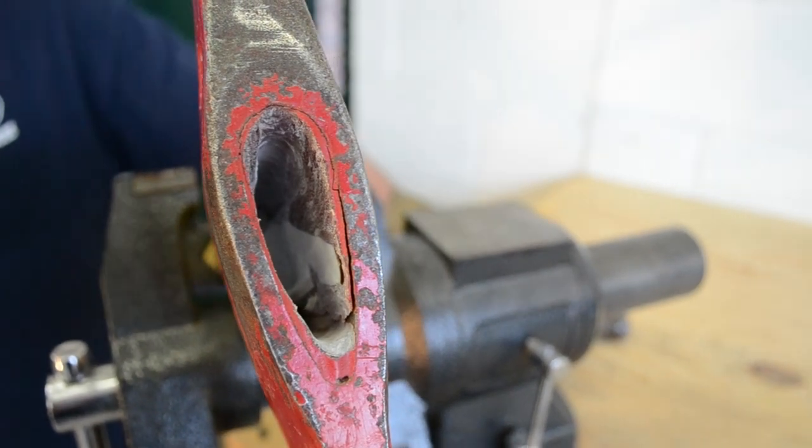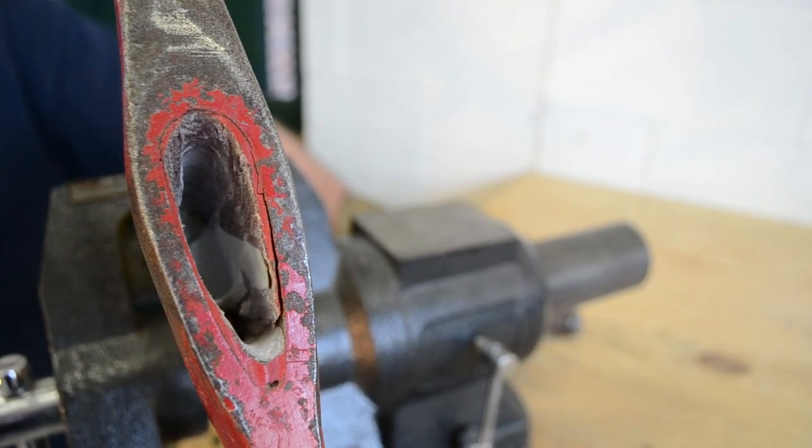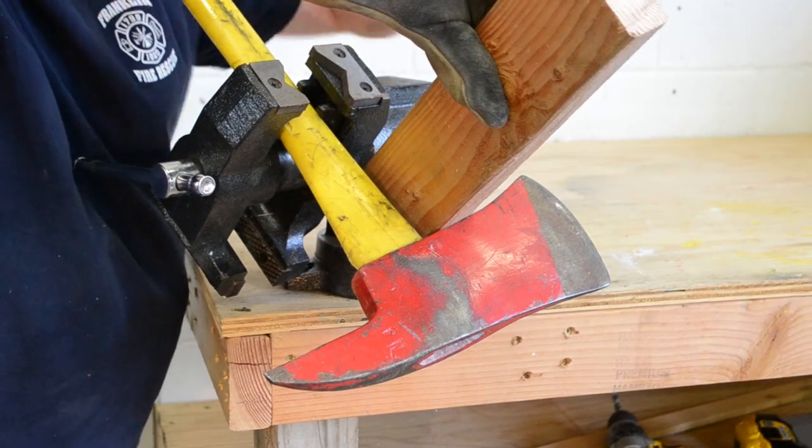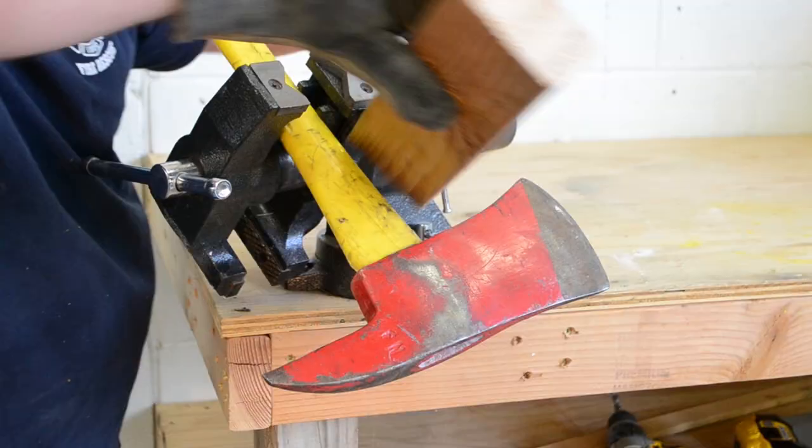Once you have removed most of the epoxy, it's now time to remove the axe head from the handle. Reposition the axe in the vise. Use a block of wood and a hammer to carefully drive the head off the handle.